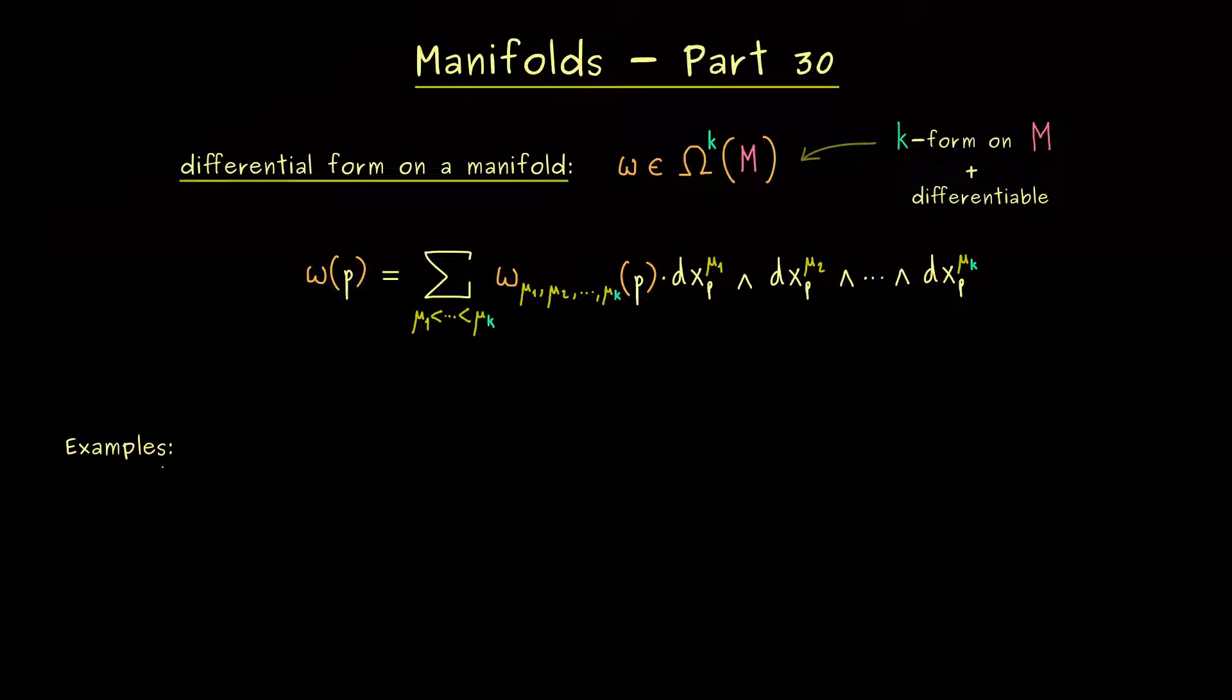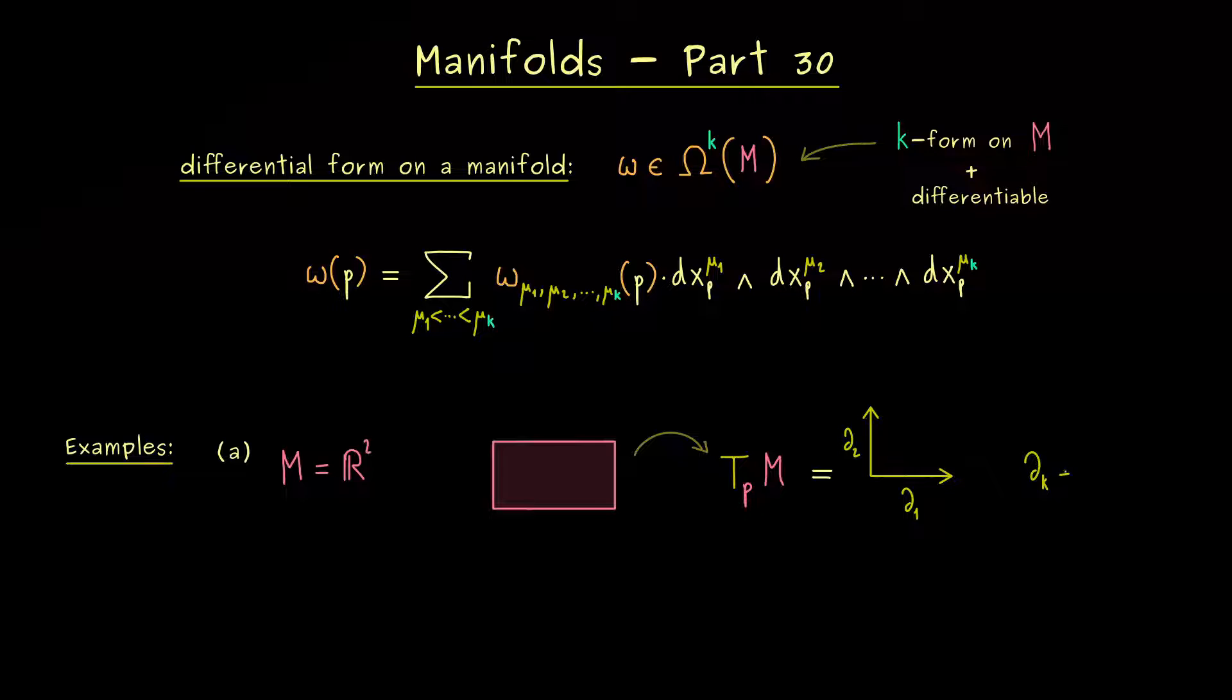First, let's start very simple by considering a very flat manifold, namely the Euclidean space R^n, and maybe keep it even more simple by taking R². This is very helpful because we only need one chart for the whole manifold, namely the identity chart. Moreover, the tangent space is not complicated—it's also R² again. Hence the coordinate basis is very simple, it's just the standard basis in R². So we can write ∂_k = e_k.